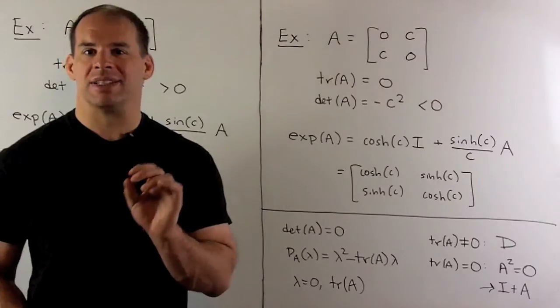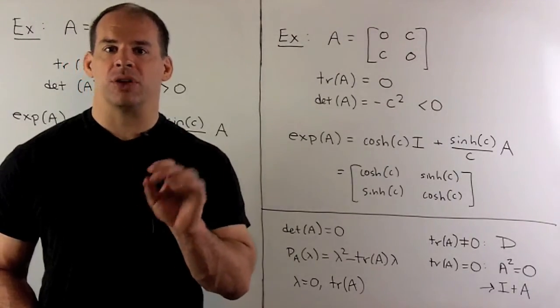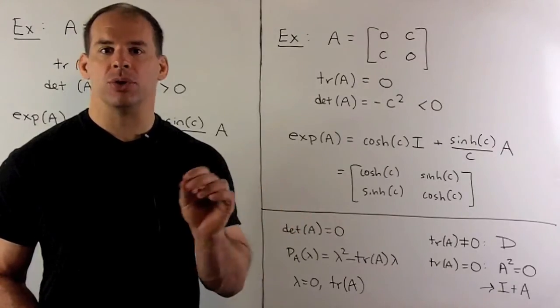If the trace of A is non-zero, it's real. We have two distinct real eigenvalues, so our matrix is diagonalizable, and we can use the previous technique.